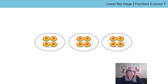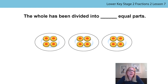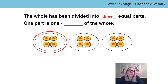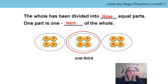Let's describe what has happened to the biscuits. The whole has been divided into three equal parts. One plate of biscuits is one third of the whole. Does it matter which plate of biscuits I select to show one third of the whole? Let's see. I could select the middle plate. Is it also one third of the whole? Can you explain that using the stem sentence above? Pause the video and have a go.